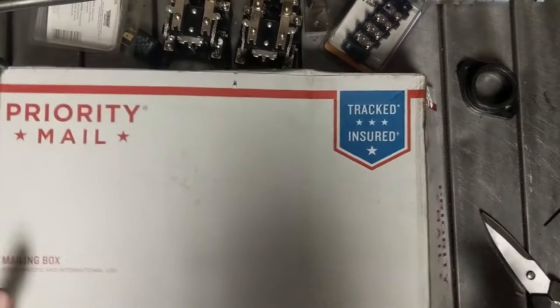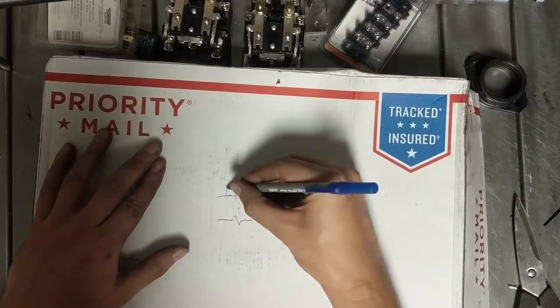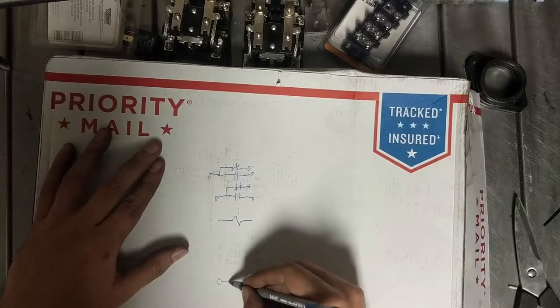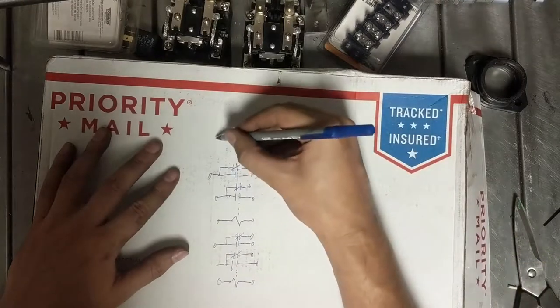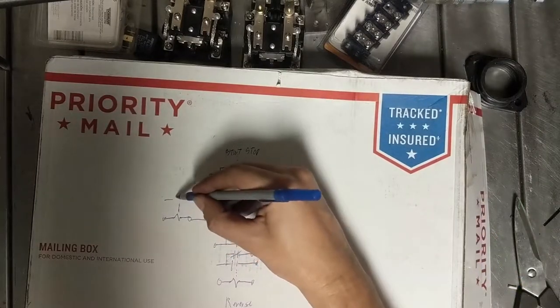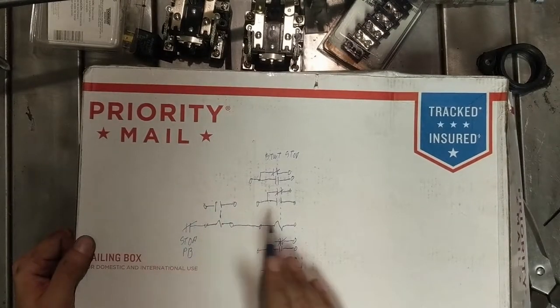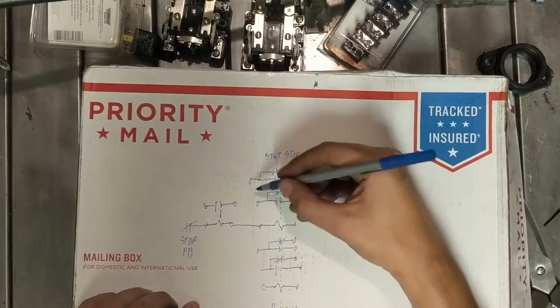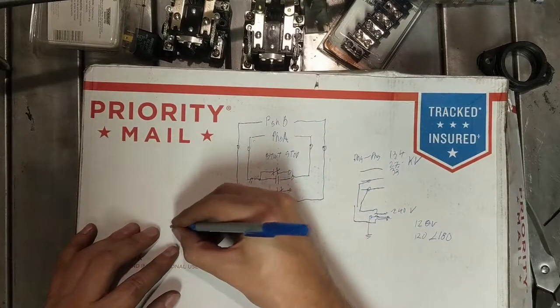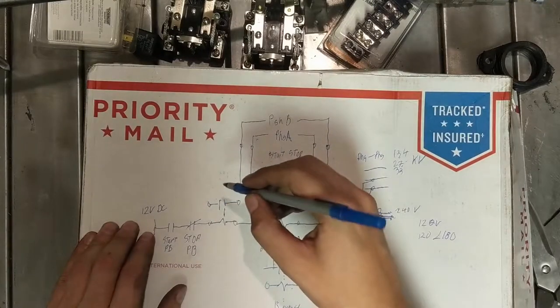Right here we've got our starting relay with normally open and normally closed contacts, and it has two sets of those. We have our forward reverse relay, and we have our seal-in relay. We're going to put that in series with our start stop relay, and this just has our one normally open contact. We want our normally closed stop switch to cut out this circuit here. The start stop relay cuts our phase voltage - phase A, phase B. We want our start push button to pick up this relay. What we don't want to have happen is we don't want to have to hold this start button down.